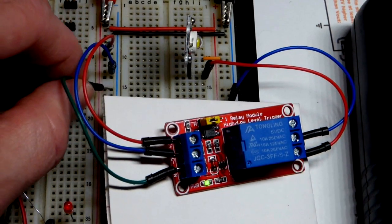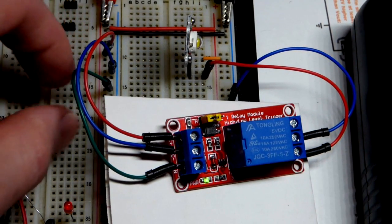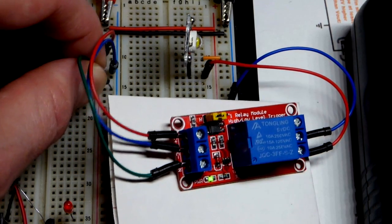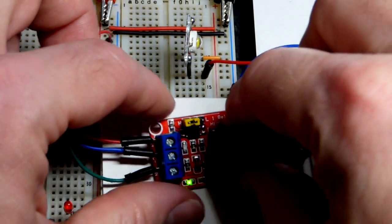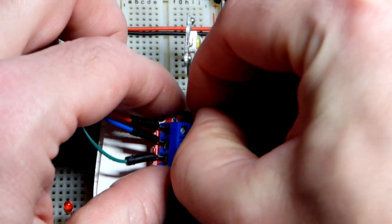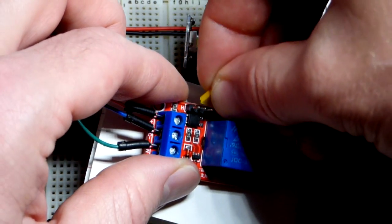If we unplug it or go to the negative supply, a low input, then it does not switch. But this particular relay module you can adjust whether it's a high input or a low input that switches it.